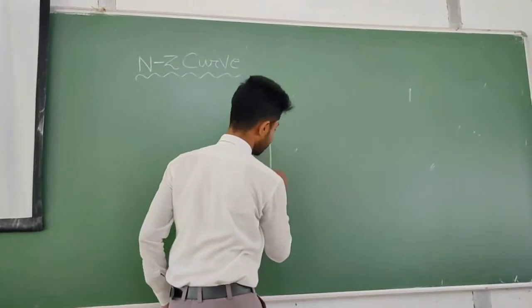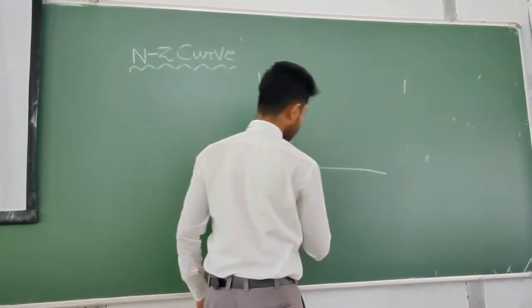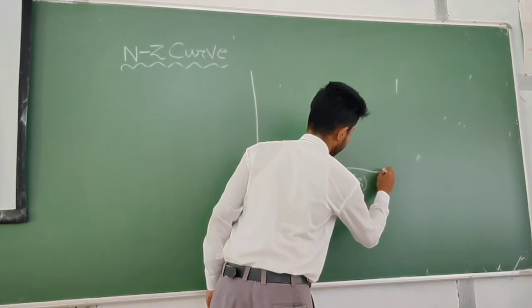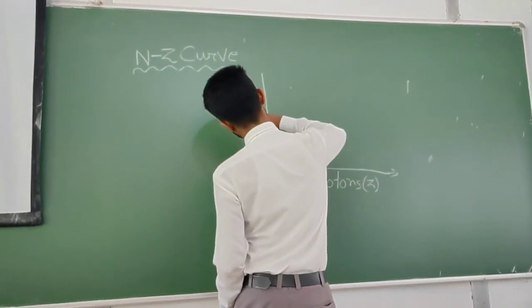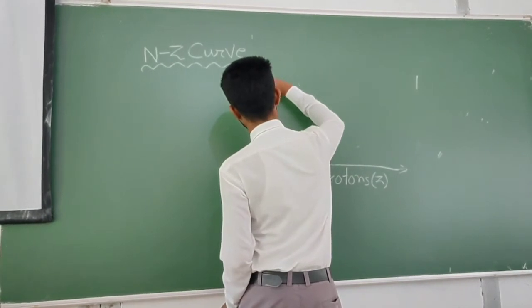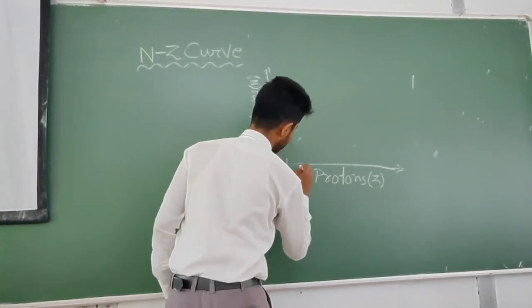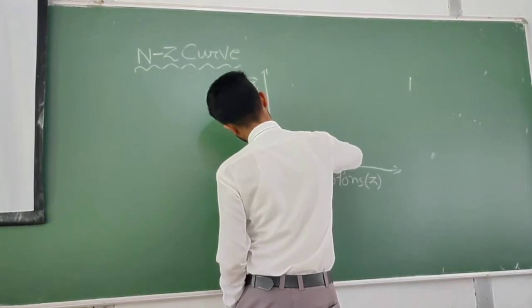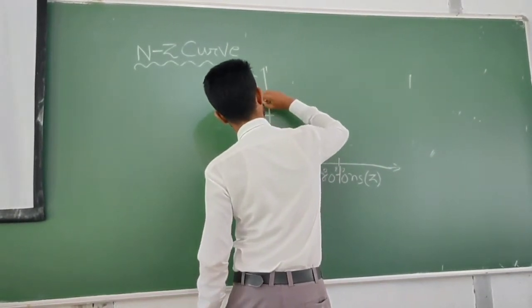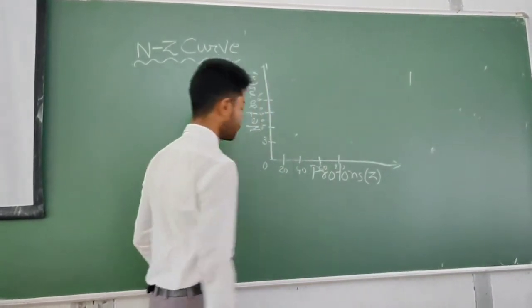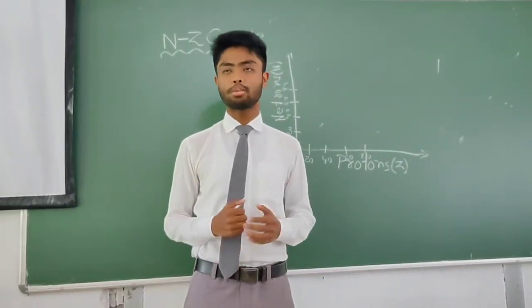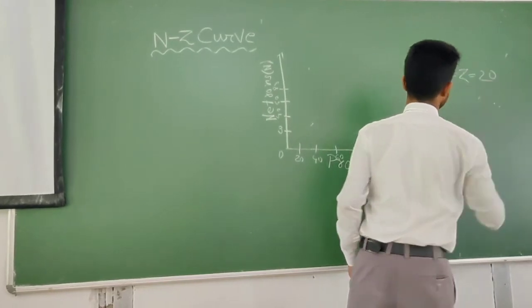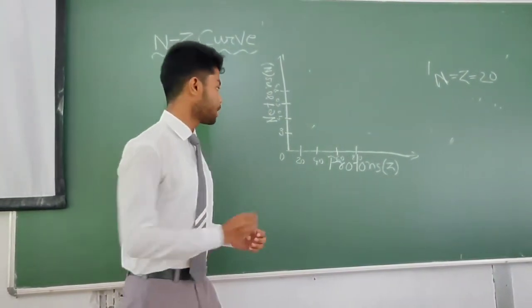So here there are two axes. This is the x-axis, and on the x-axis we take protons. And on the y-axis we take neutrons. So what happens when the proton number and neutron number is equal to 20 — that is N equal to Z equal to 20 — then this stability curve for stable nuclei is straight.